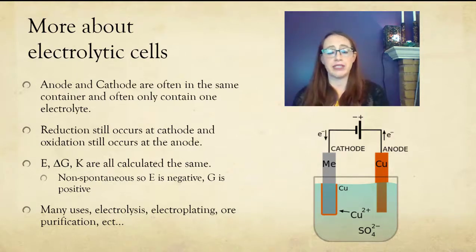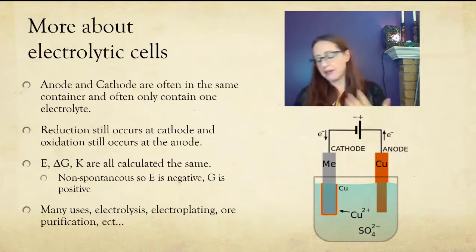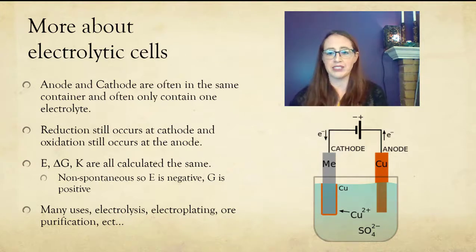Now, all the formulas that we have, the interrelate E, K, and G that we talked about in previous videos, they're still valid. That doesn't change. Now, since specifically this is non-spontaneous, that means that for an electrolytic cell, E is going to be negative, and then G would be positive. So that's specifically related to this, but it follows all the same rules in general that we always think of for our reactions.